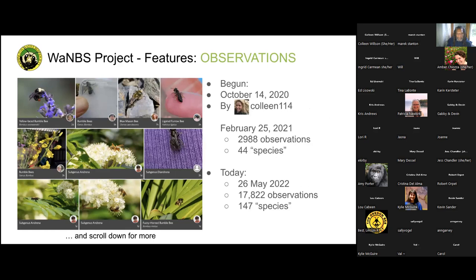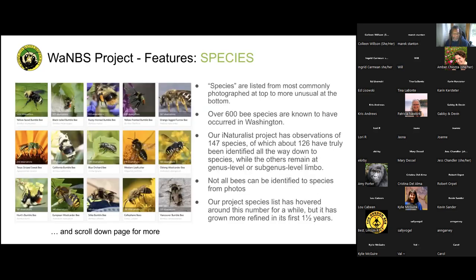So, observations. We started this around October 14th, 2020. When we did our first presentation we had under 3,000 observations and 44 species. Today we're at 17,822 observations — it's grown tremendously. For species, it's not quite 147 — we checked and it was about 126 or 127. We have a lot identified to subgenus, and then we have some errors. So it's not an exact science on that number.